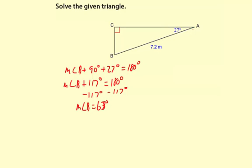And you could have worked this out a little more efficiently because you have 90 degrees here. You can say that 27 degrees plus measure of angle B has to equal 90 and then just subtracted the 27 from there. So this guy here is going to be 63 degrees.